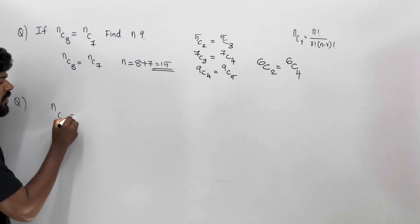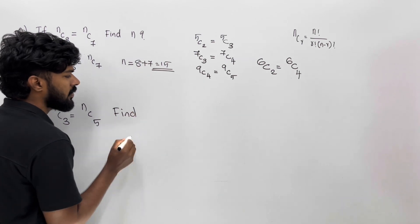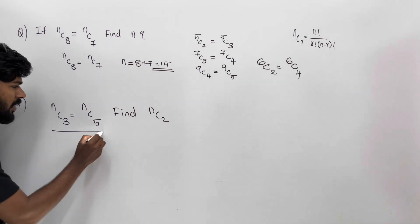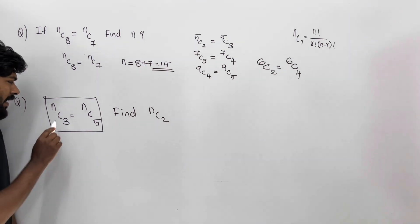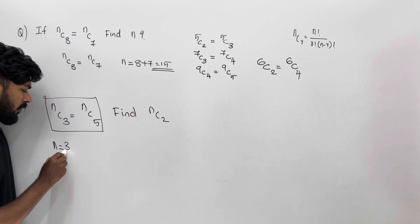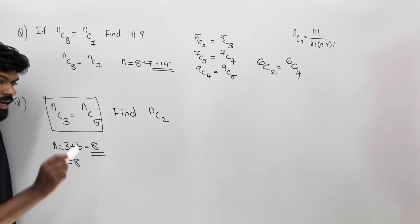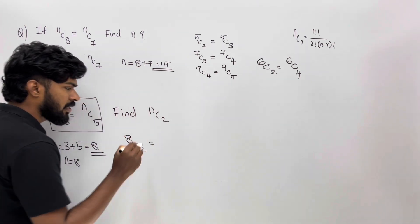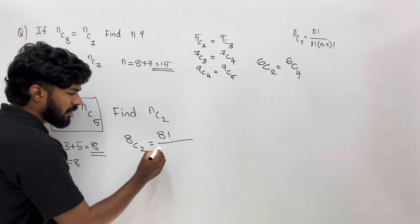If nC3 equals nC5, find nC2. We can work through it. n equals 8, so nC2 is 8C2. 8C2 is 8 factorial by 2 factorial into (8 minus 2) factorial.